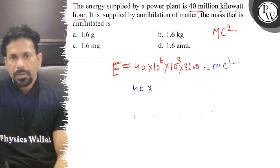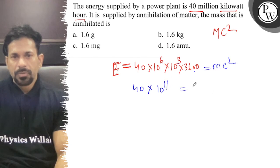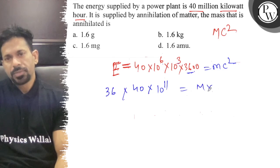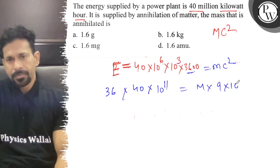40 into 10⁶ into 3600, 10¹¹, that is equal to M into 36. That is equal to M into c² 9×10¹⁶.